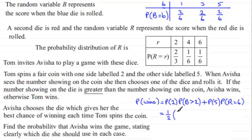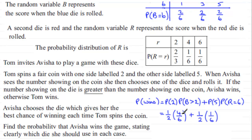Then we add the probability of getting a five on the fair coin, which is one half, multiplied by the probability that the red die comes up with a six, which is one sixth. Working this out: we've got four twelfths plus one twelfth, and that gives a total of five twelfths. And there's your answer.